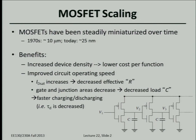Scaling down the channel length improves circuit operating speed. For digital logic circuits, you can conduct more current — you have less on-state resistance. If the size of the transistor and the gates is smaller, you have less capacitance. Also, if the source and drain regions are not as long, you have less junction capacitance, and you can pack more transistors closely together so interconnect wire lengths are shorter, reducing capacitance further.